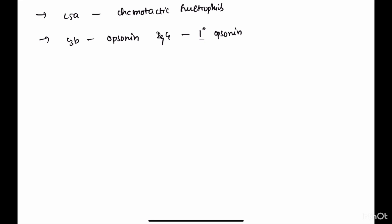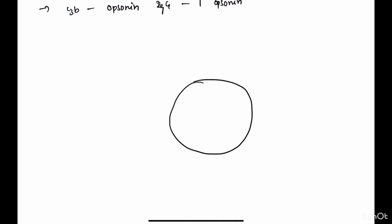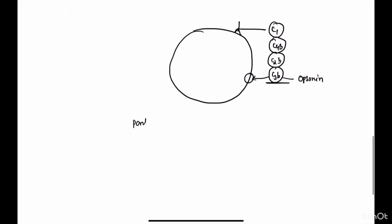Sometimes the classic complement pathway cascade goes only up to C3b and stops. In this partial activation, C1, C4b, C2b, and C3b are formed; C3b falls on the bacteria and attaches to the lipopolysaccharide on the bacterial wall. Because C3b acts as an opsonin, it attracts macrophages for phagocytosis. This is known as partial activation of the classic complement pathway.